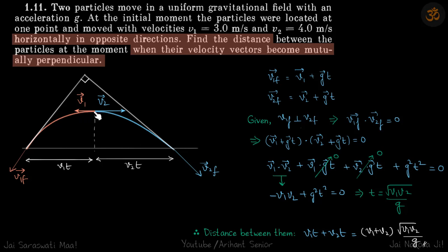We are given two particles that are launched horizontally in opposite directions. We need to find the distance between them when their velocity vectors become mutually perpendicular. So the velocity vectors are perpendicular and we need to find the distance between them when that happens.